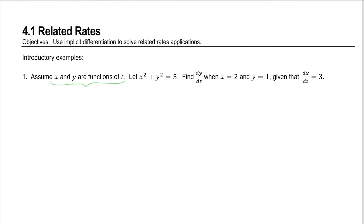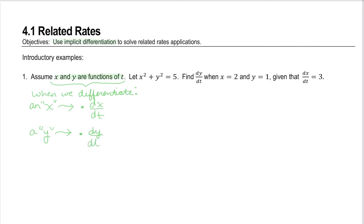If we are going to treat x and y as functions of t, that means when we use implicit differentiation, anytime we differentiate an x, we're going to need to multiply by a factor — the chain rule idea of introducing a factor of dx/dt. That's the mechanics of what we need to do here. Otherwise, this should seem familiar.